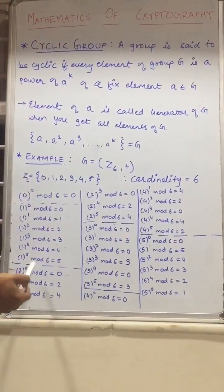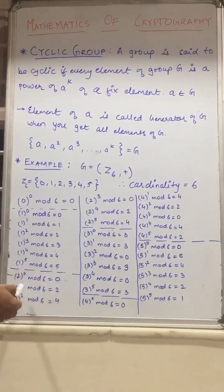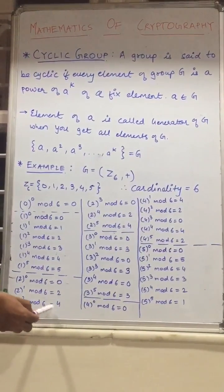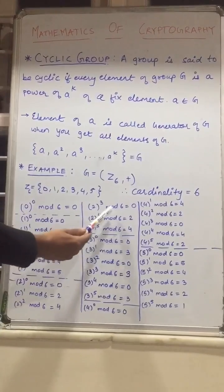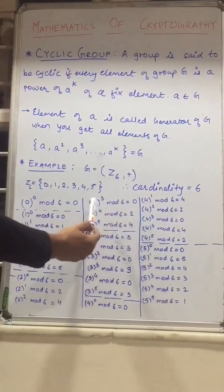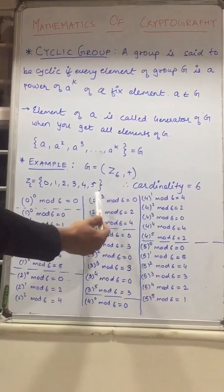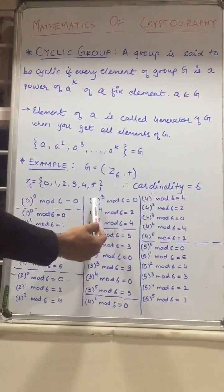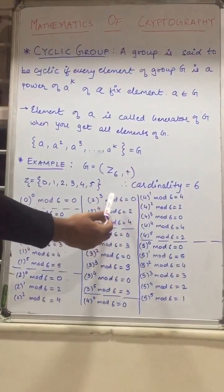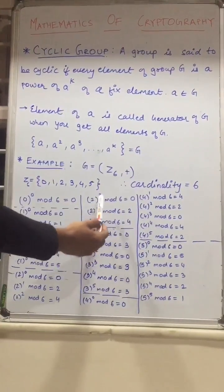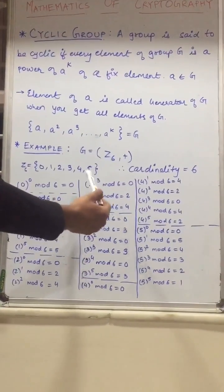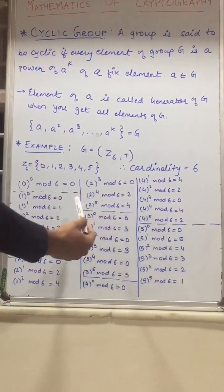Now let's move to 2. So 2 raised to 0 mod 6 is equal to 0. 2 raised to 1 mod 6 is equal to 2. 2 raised to 2 mod 6 is equal to 4. 2 raised to 3 mod 6 is equal to 0, because 2 plus 2 plus 2 is equal to 6, and 6 mod 6 is equal to 0. 2 raised to 4 means we add 2 four times, so it will be 8 mod 6 is equal to 2.